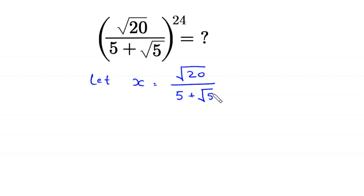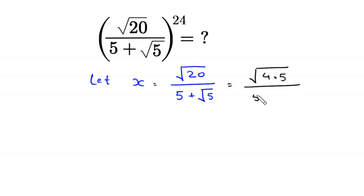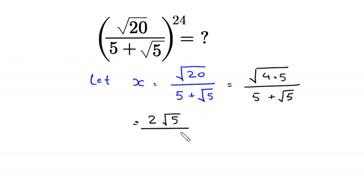Now, we simplify this expression. This is equal to: square root of 20 can be written as square root of 4 times 5, divided by 5 plus root 5. Next, square root of 4 is 2, so this becomes 2 times square root of 5 divided by 5 plus root 5.